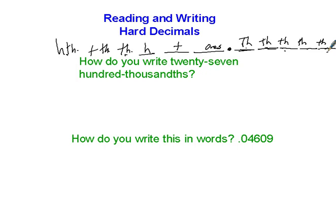Okay, so how do we write twenty-seven hundred thousandths? Hundred thousandths is the name of the place that we have to end in. I'm going to write the number twenty-seven, and then I'm going to make sure that last digit is in the hundred thousandths place.